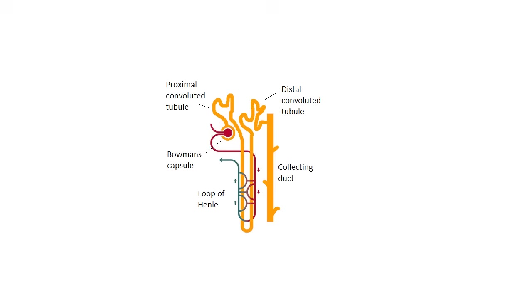Here's a more complicated diagram. Let's work our way through it, starting with the Bowman's capsule. The Bowman's capsule surrounds the glomerulus. The glomerulus is a bunch of capillaries with very high-pressure blood. All the little bits and pieces get squeezed out and are absorbed into the Bowman's capsule, where they go into the tubule. The Bowman's capsule surrounds the glomerulus and helps filter blood. The first part of the tubule is called the proximal convoluted tubule — proximal because it's close to the glomerulus, convoluted because it's all twisted up, which gives it extra length.